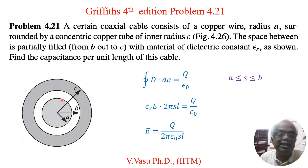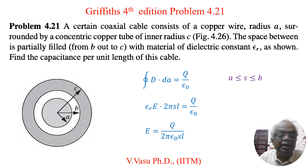So there is a wire, and we have a concentric copper tube with inner radius C. Our aim is to find the capacitance. First, take the region A to B. Consider a distance S which is between A and B.